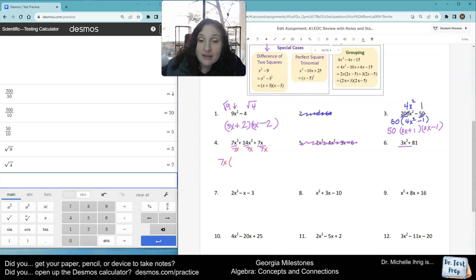Now when I do that, these 7s cancel. I have x cubed here and x here, so that means I'm just left with x squared. 14 divided by 7 gives me positive 2. I'm going to take one of these x's away for that one. So I'm just left with plain x. Here, the 7s cancel. Here, the x's cancel. So I'm left with 1, not 0, 1.